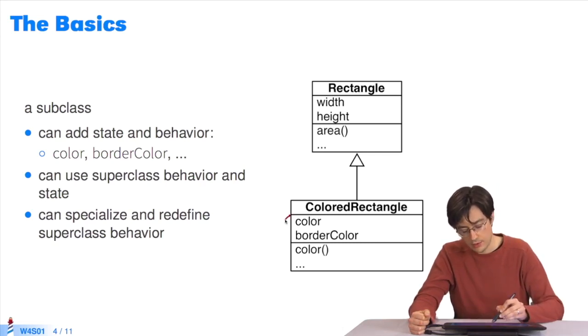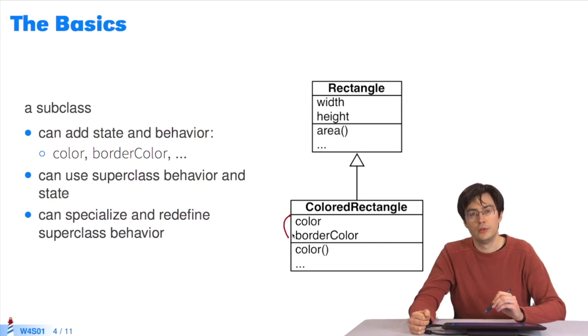Here, the colored rectangle class adds state in the form of two instance variables, color and border color. It also adds a method, color.